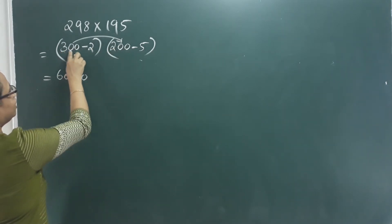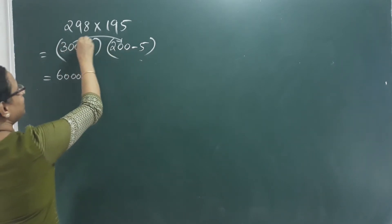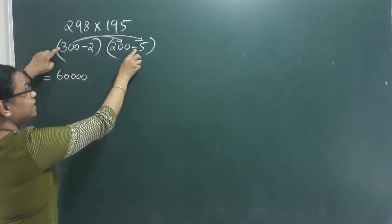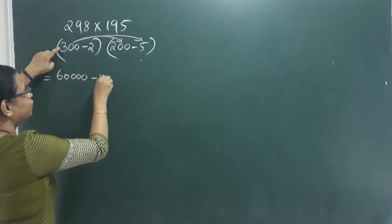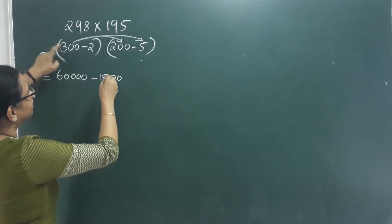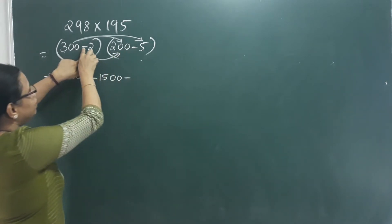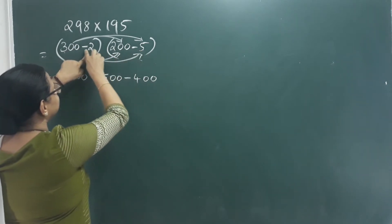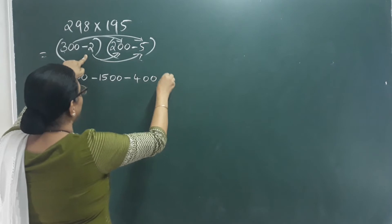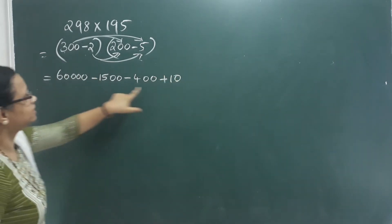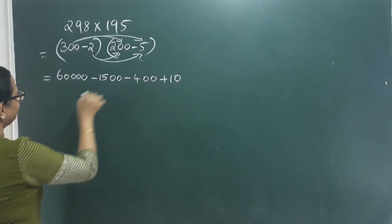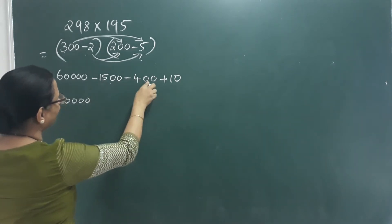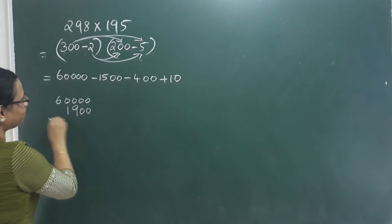We have 4 zeros, then 3 into 5 is 15. This term is plus, and these terms are minus. We get minus 15 and minus 10. Then we get 6,000, minus 1,900, and 500 minus 400.